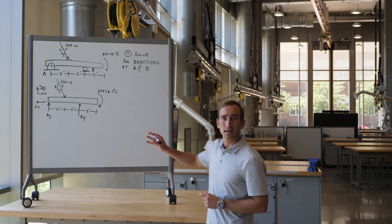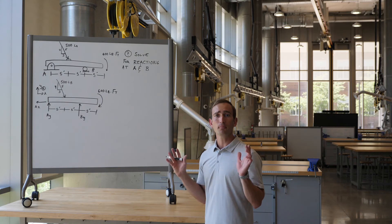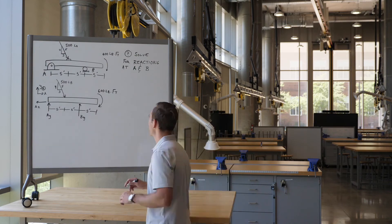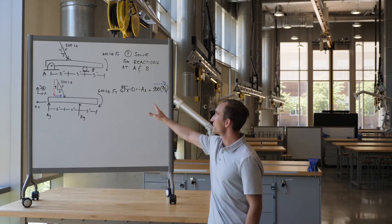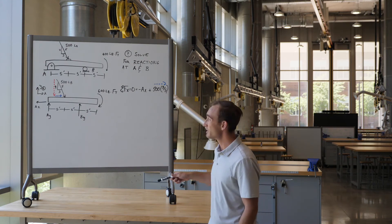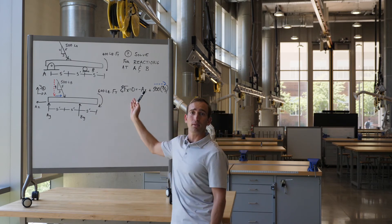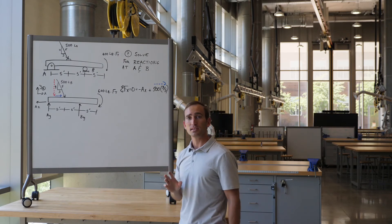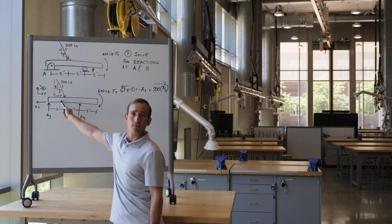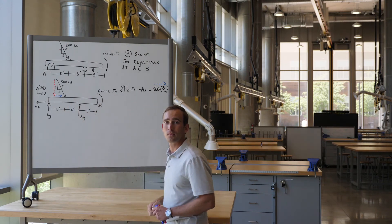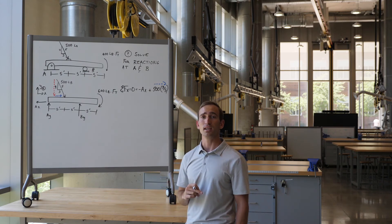Now that I've drawn the free body diagram with all dimensions and forces modeled, we set up the system of equations. Starting with the sum of the forces in X: we have AX — drawn pointing left so it's negative — and the X component of the applied force, which is 500 times 3 over 5 using the 3-4-5 similar triangle. Solving gives AX equal to 300 pounds.